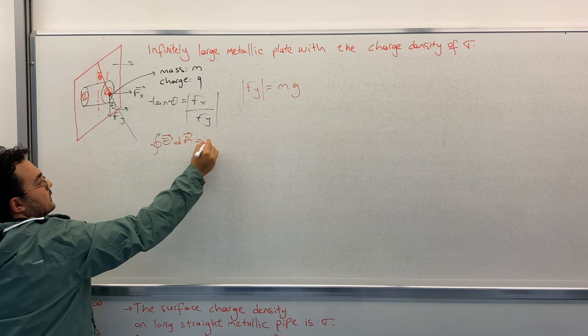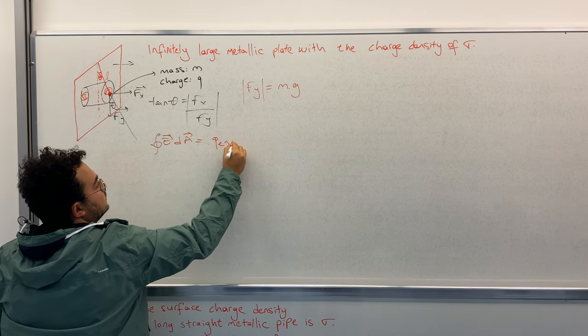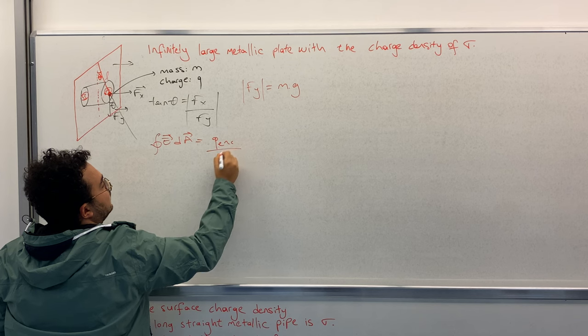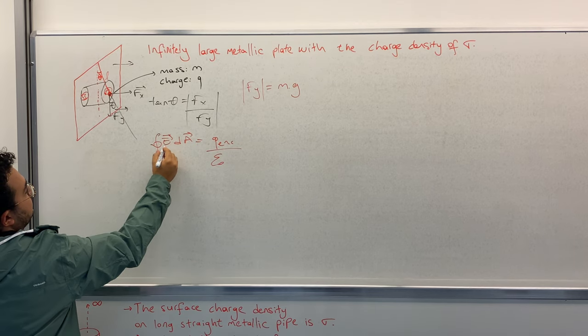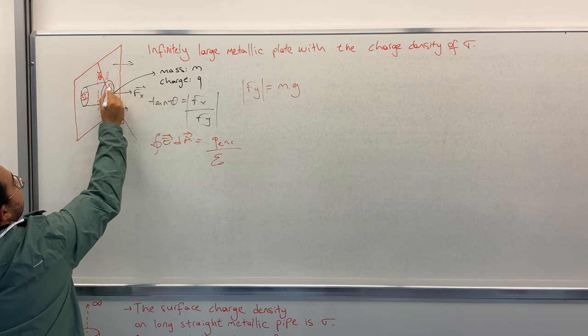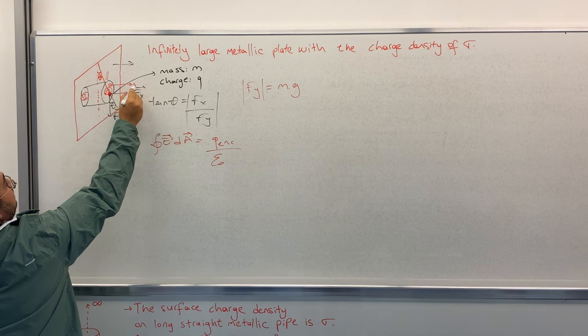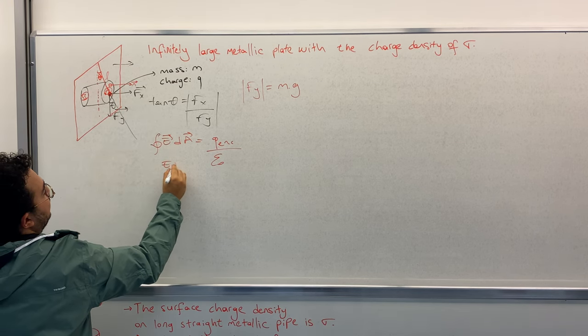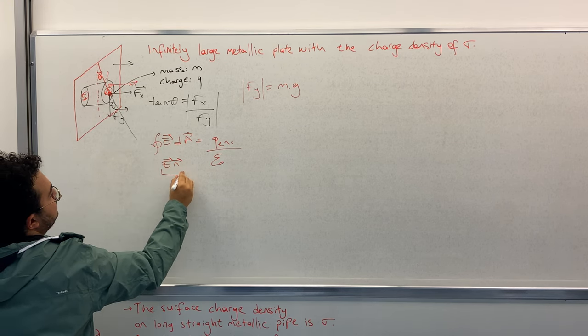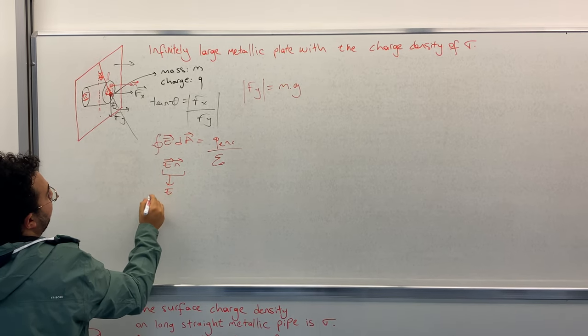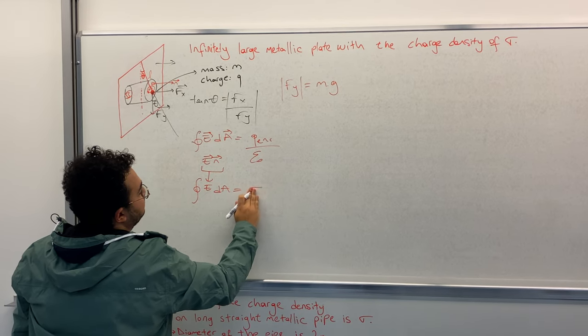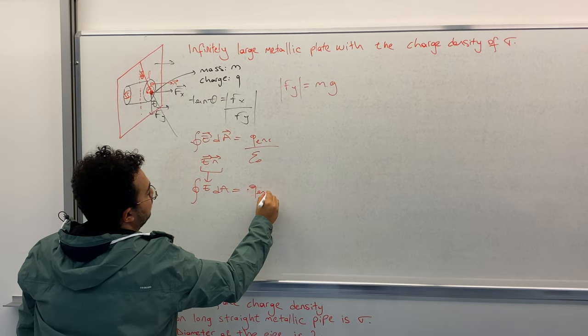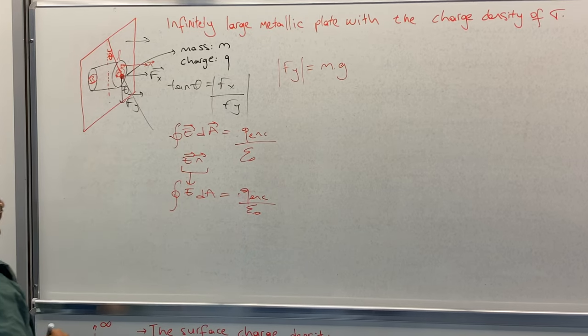This time, because the plate is infinitely large, all the electric field lines are outside of the plate and normal to the plate. That causes that on this side surface we have no electric flux, so we won't put that in our calculations. We only need A and B now. Gauss's law, so it's Q enclosed divided by epsilon zero.